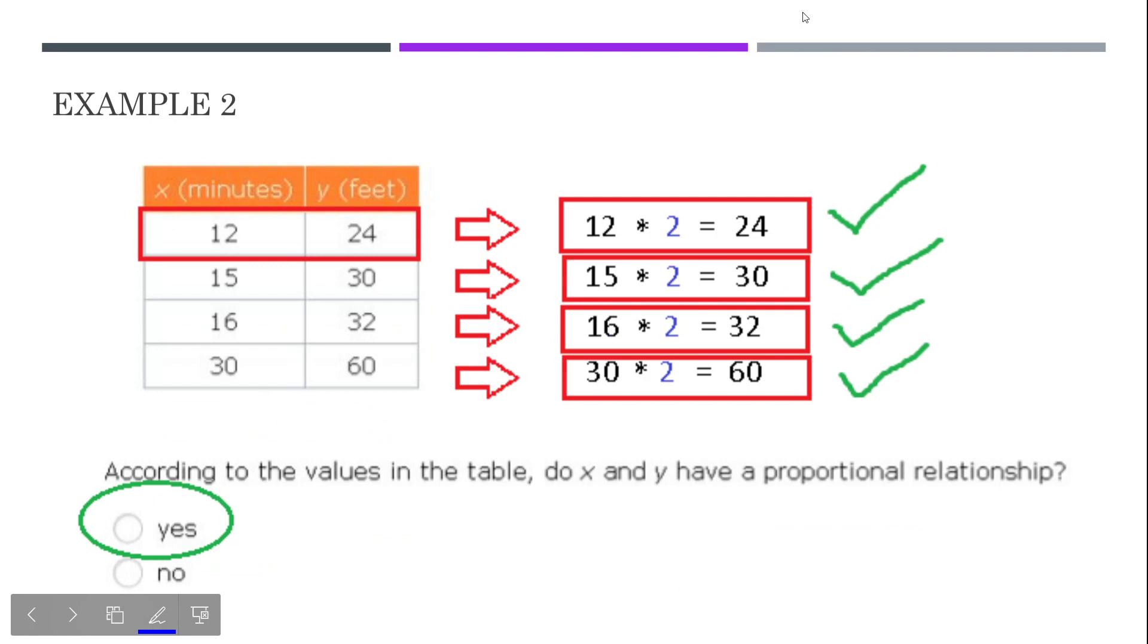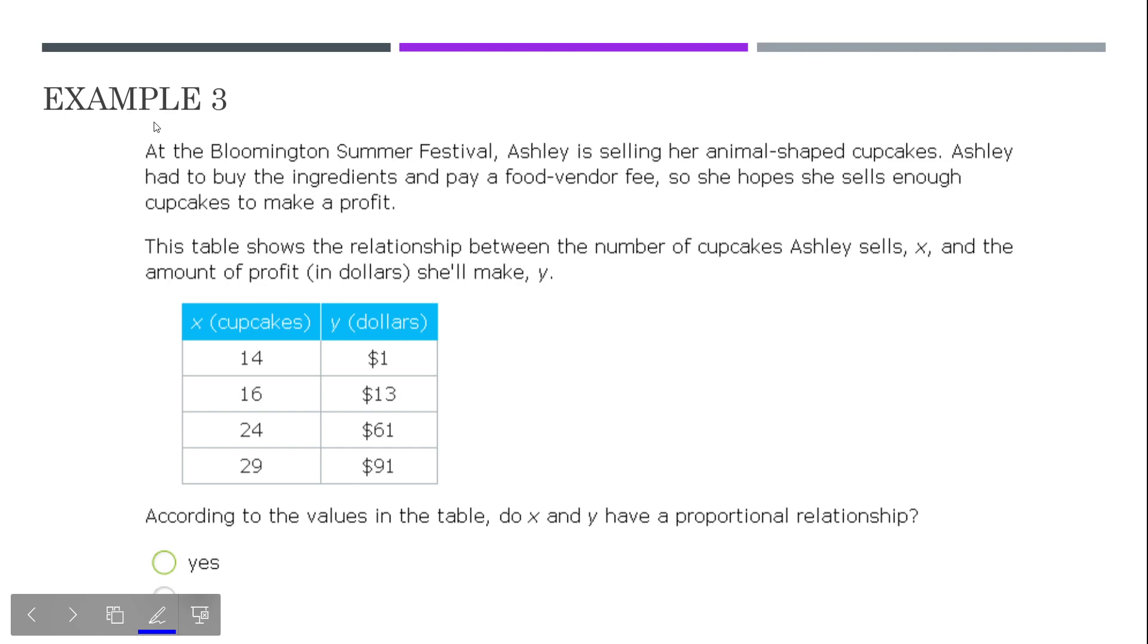Here's the slide, if you want to take a look at that. Okay. So, example 3. This one's a little bit harder. This was one of the challenge questions, but no reason you couldn't do it. At the Bloomington Summer Festival, Ashley is selling her animal shaped cupcakes. Ashley had to buy the ingredients and pay a food vendor fee. So, she hopes she sells enough cupcakes to make a profit. This table shows the relationship between the number of cupcakes Ashley sells, X, and the amount of profit in dollars that she'll make. And, we're calling that Y. So, her profit is Y, and the amount of cupcakes she sells is X.